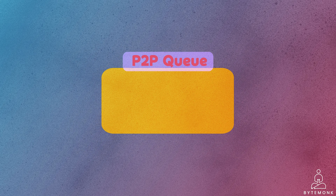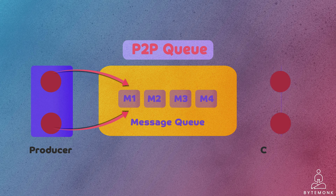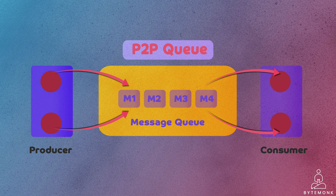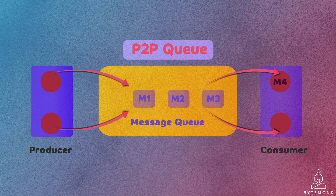In the P2P queuing model, messages are stored sequentially in a queue. Producers push messages to the rear end of the queue, and consumers extract the messages from the front. Messages are sent from a sender to a specific receiver, known as the queue or destination, and each message is consumed by only one receiver, ensuring that each message is processed exactly once. Unlike the pubsub model, in P2P a particular message can be consumed by a maximum of one consumer. Once a consumer grabs a message, it is removed from the queue, ensuring exclusive message processing.